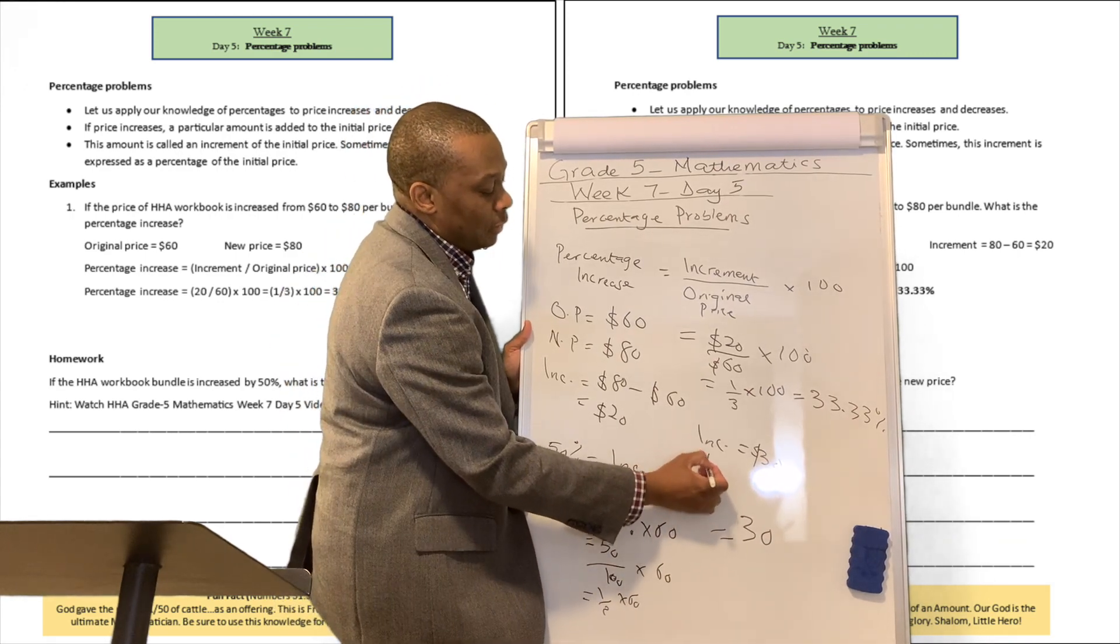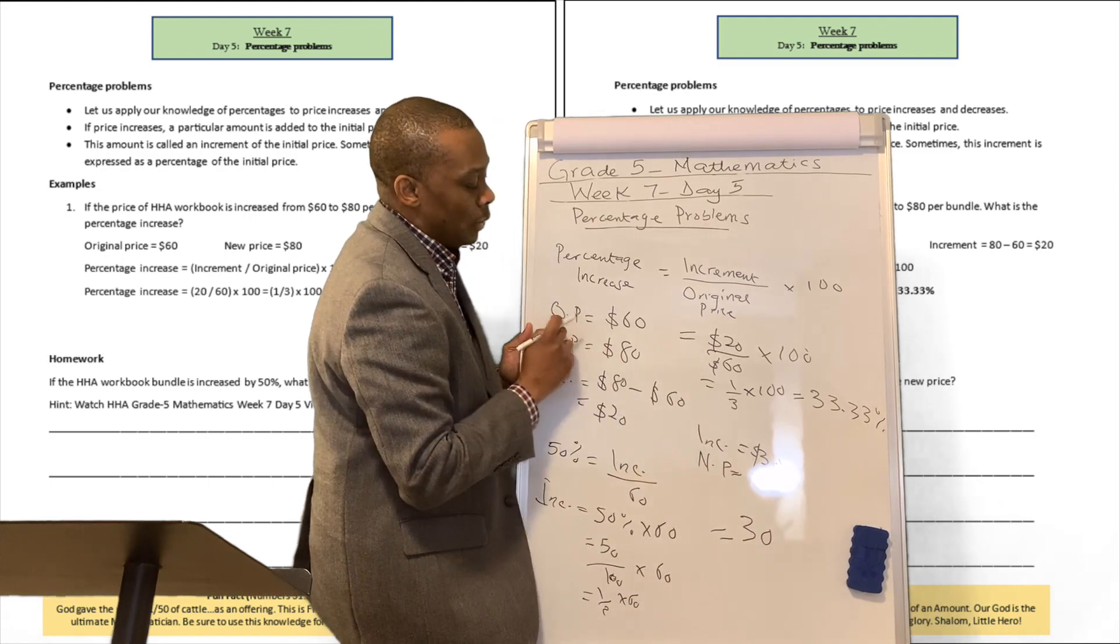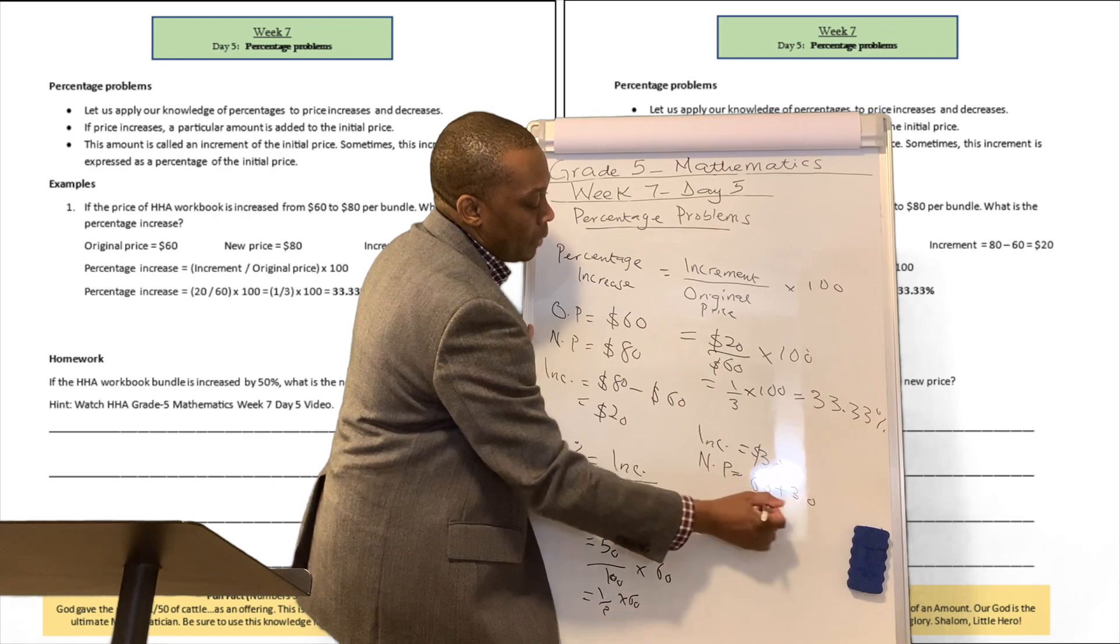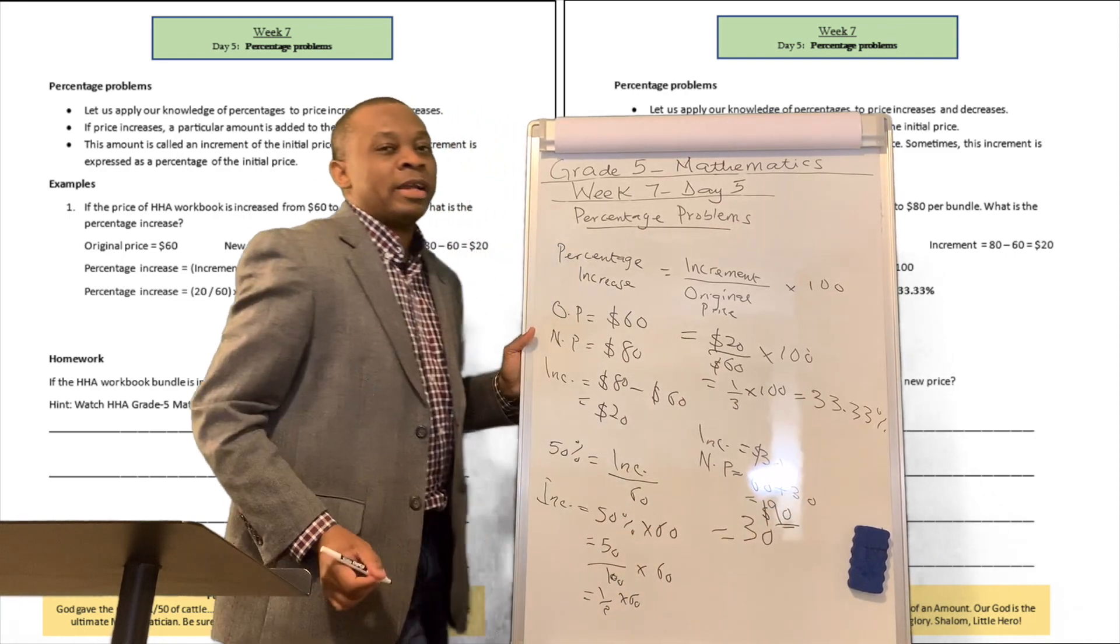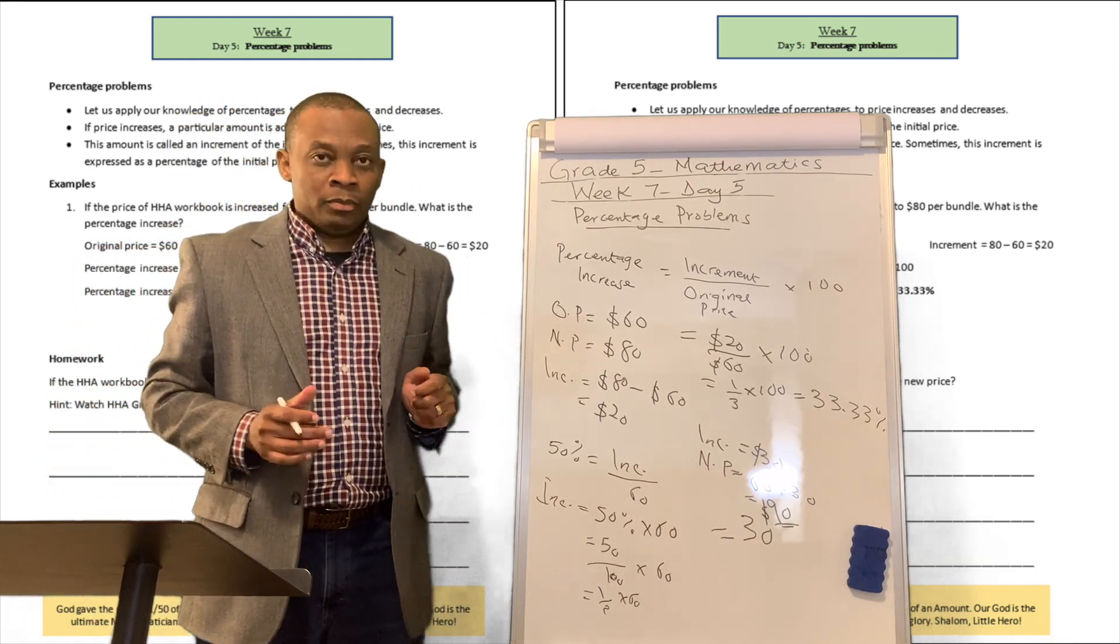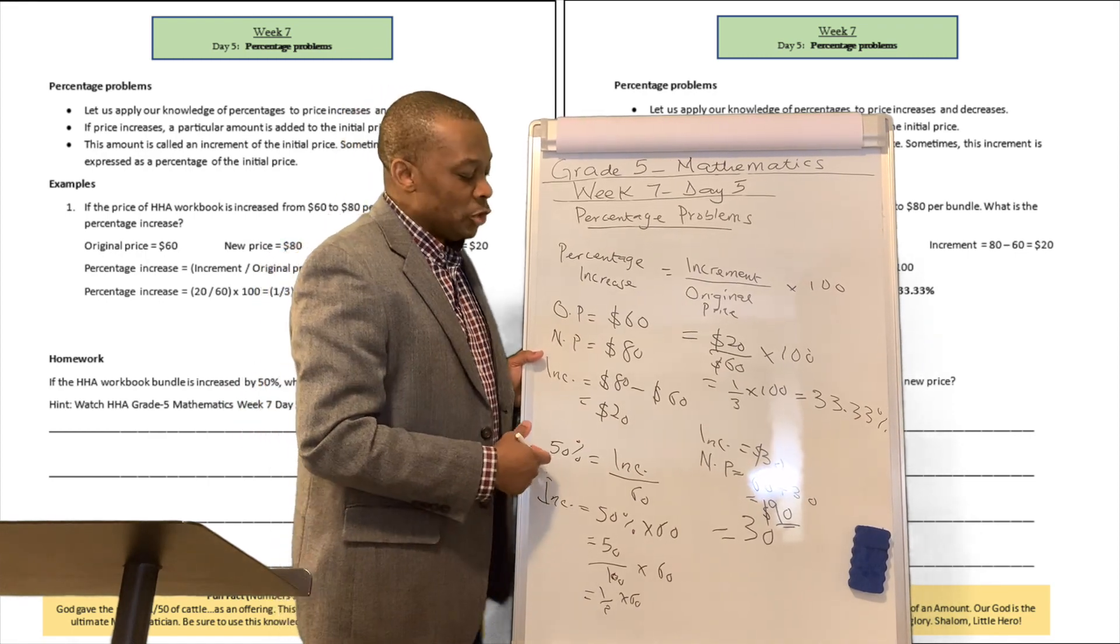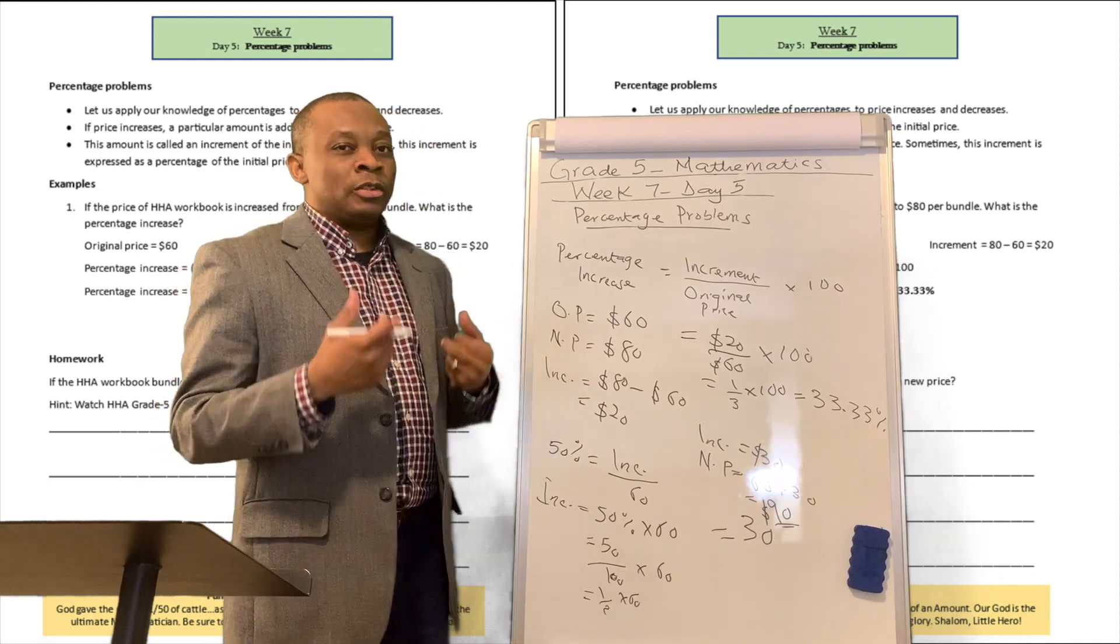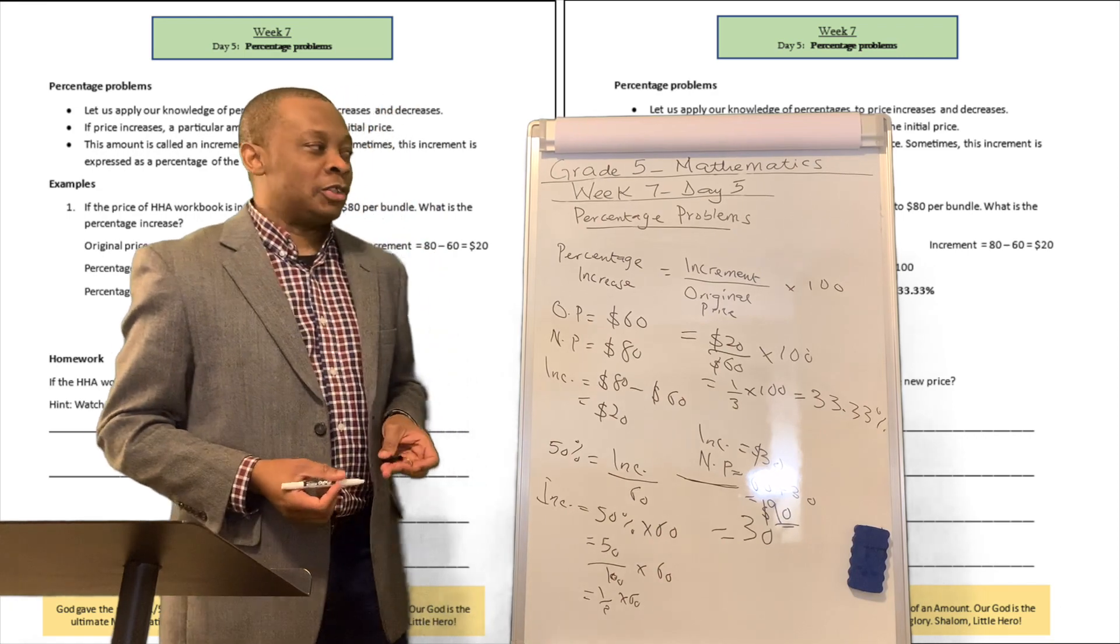All right? So, what's the new price? Well, the new price will be equivalent to original price, OP, plus the increment, which is going to be 60 plus 30, which gives us $90. All right? So, that's going to be our answer right over there. So, if the workbook was increased by 50%, what is the new price? You're going to calculate the increment, and then add that to the original price, and you're going to get your new price, just like that.